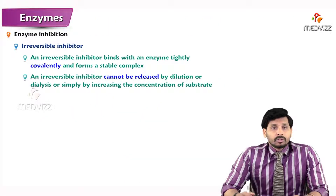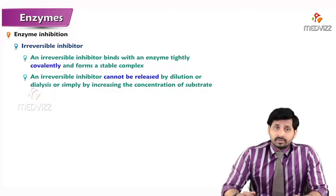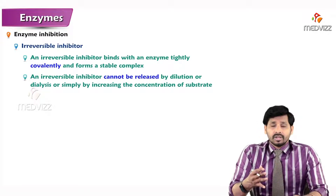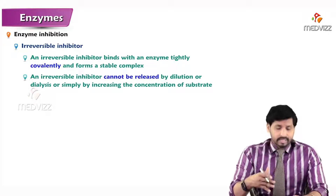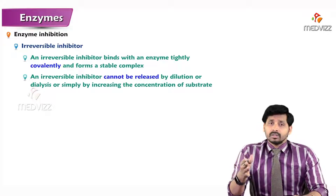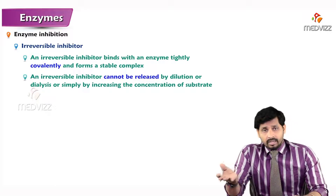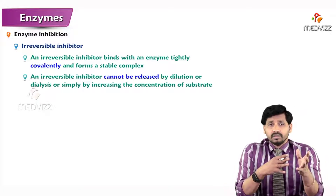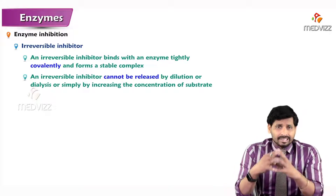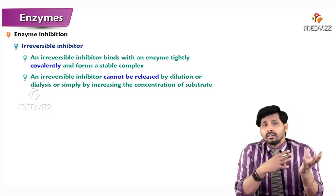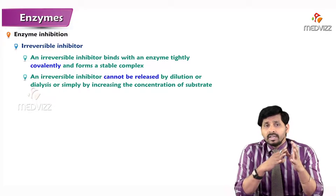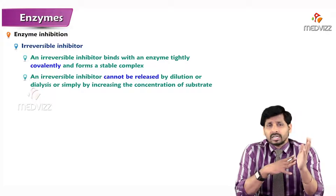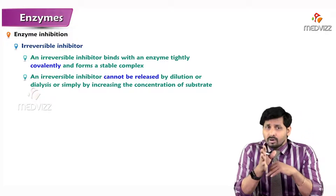In this video we'll be talking about irreversible type of inhibition. As discussed in previous videos, reversible inhibitors bind to the enzyme by non-covalent bonds like hydrogen bonds, which are easy to break. In contrast, irreversible inhibitors tightly bind to the enzyme by means of covalent bonds, which are not that easy to break.